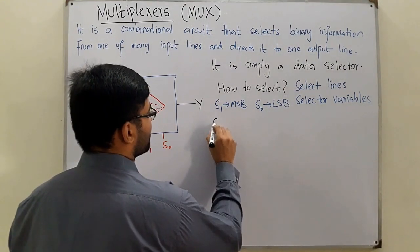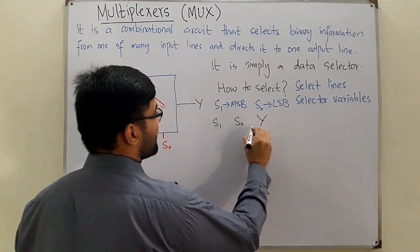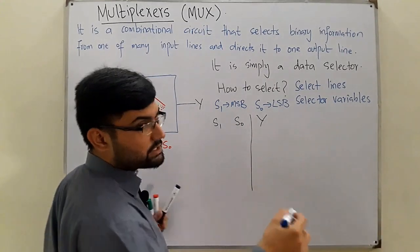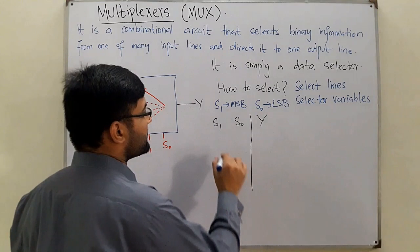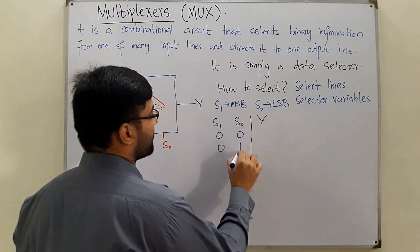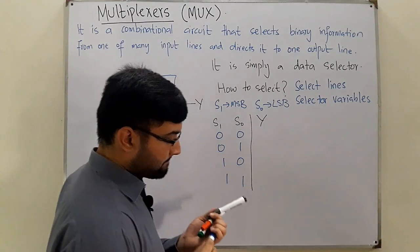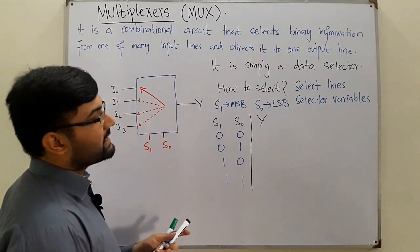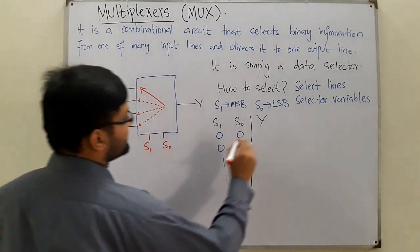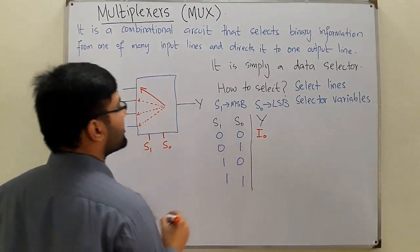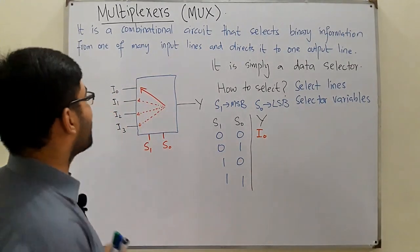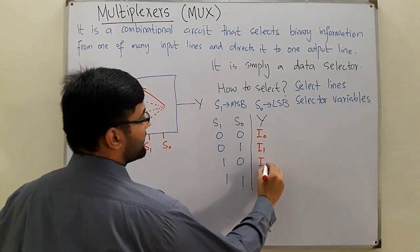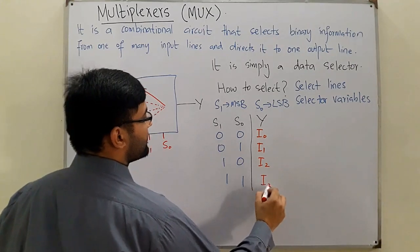Drawing the truth table: we have S₁, S₀, and the function Y. With two variables there are 2² = 4 combinations. When S₁S₀ = 00, I₀ is selected. When S₁S₀ = 01, I₁ is selected. When S₁S₀ = 10, I₂ is selected. When S₁S₀ = 11, I₃ is selected.